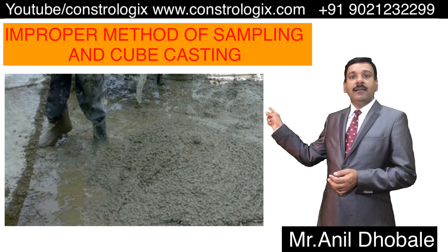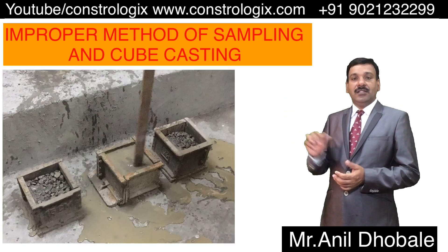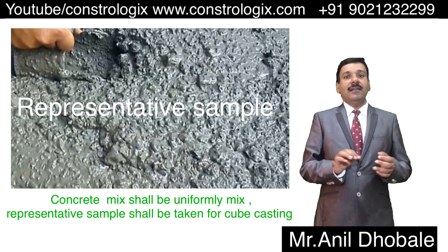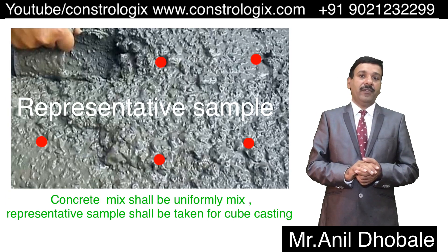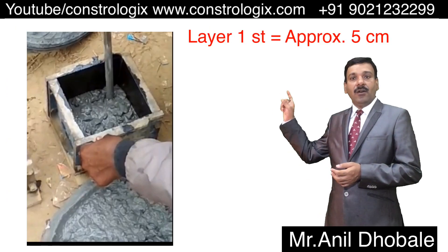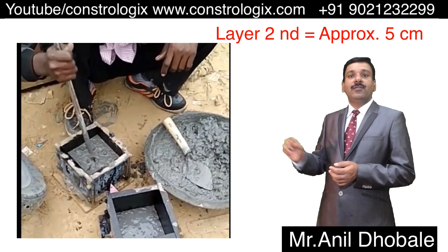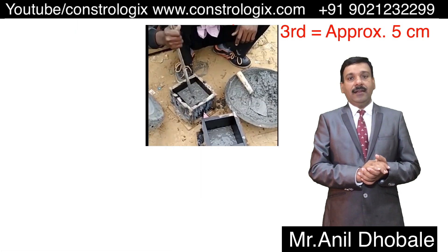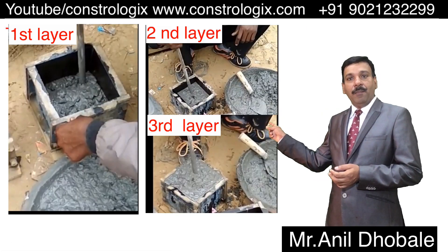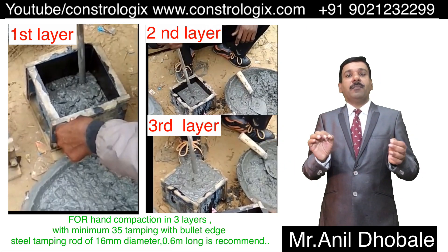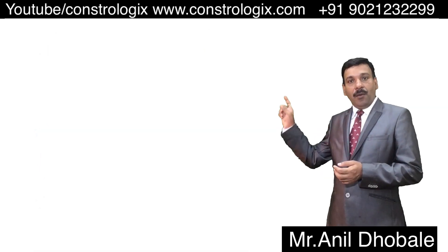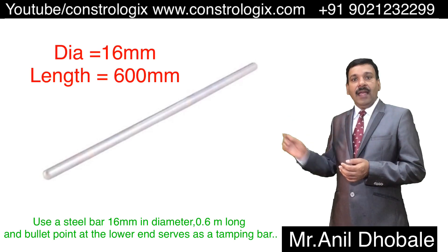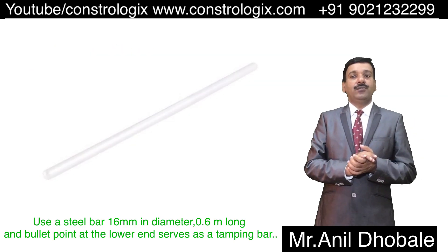Improper method of sampling and cube casting. The test specimen shall be made as soon as possible after mixing of ingredients. The concrete shall be filled into the mold in layers, approximately 5 cm in depth. Each layer shall be compacted by hand or by vibration. When compacted by hand, a standard tamping bar of 16 mm diameter and 600 mm length shall be used.